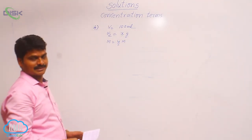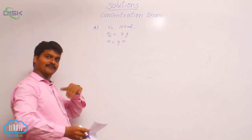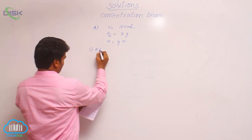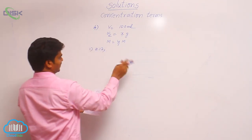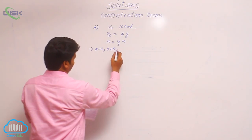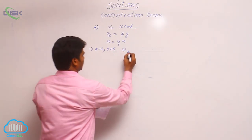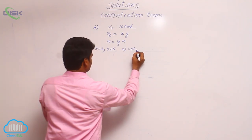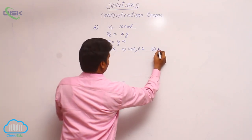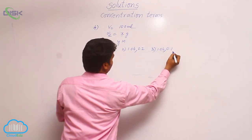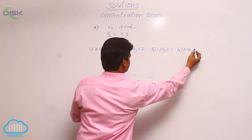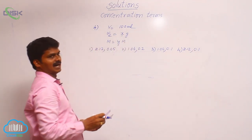So let us verify the options, which are also given here. First option: x = 2.12 grams, y = 0.05 molar. Second option: 1.06 grams and 0.2 molar. Third option: 1.06 grams and 0.1 molar. Fourth option: 2.12 grams and 0.1 molar.